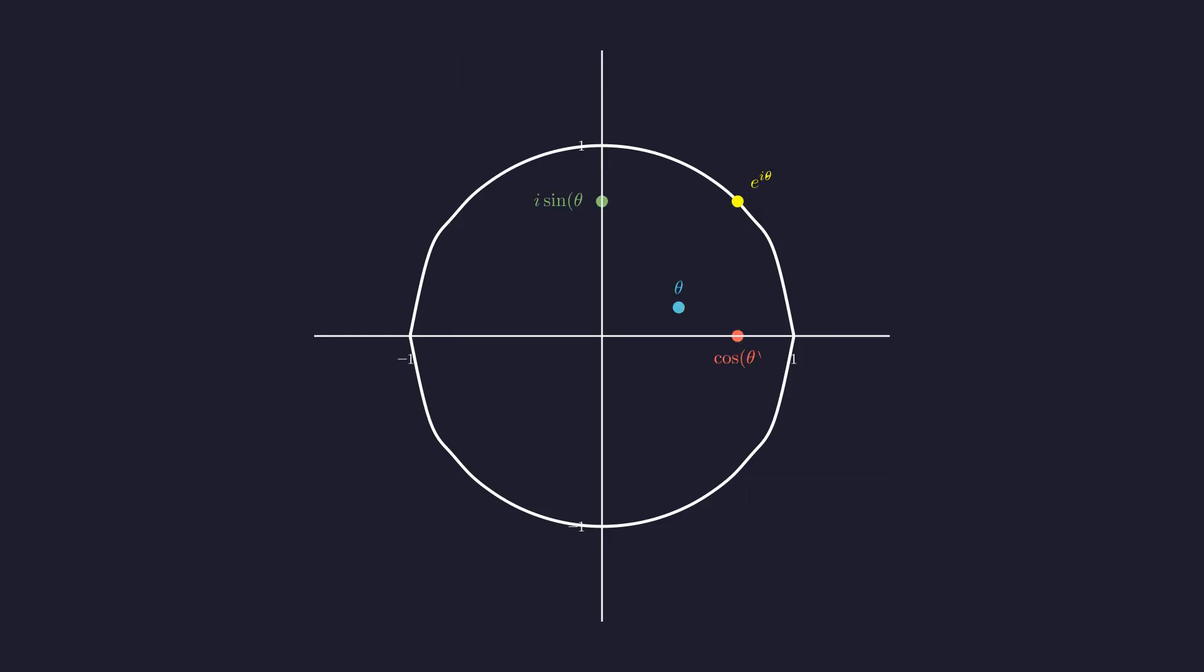For any angle theta, the point on the circle is given by e to the i theta. Its projection on the real axis is cosine theta, and its projection on the imaginary axis is i sine theta.